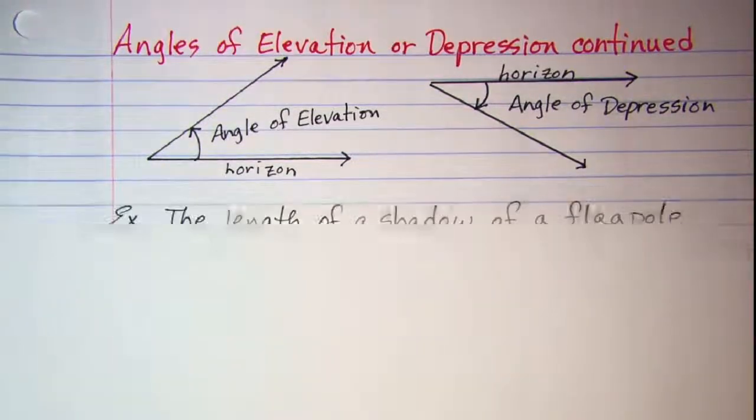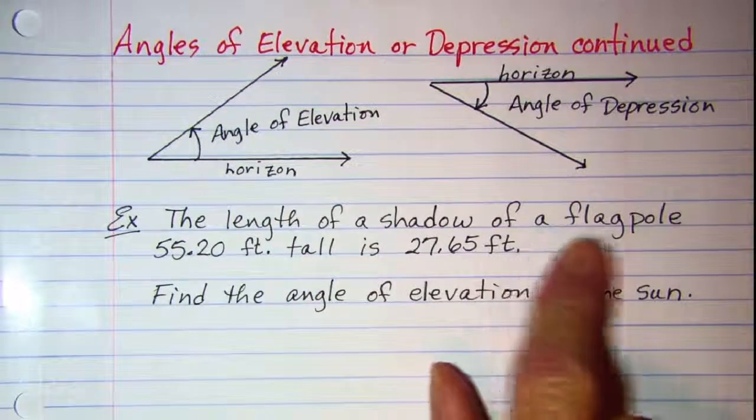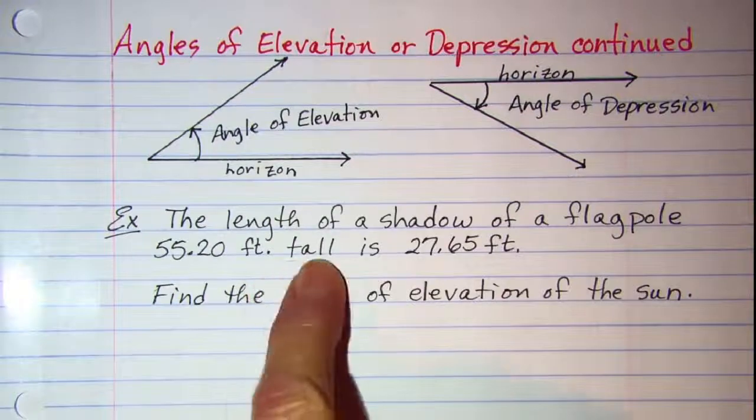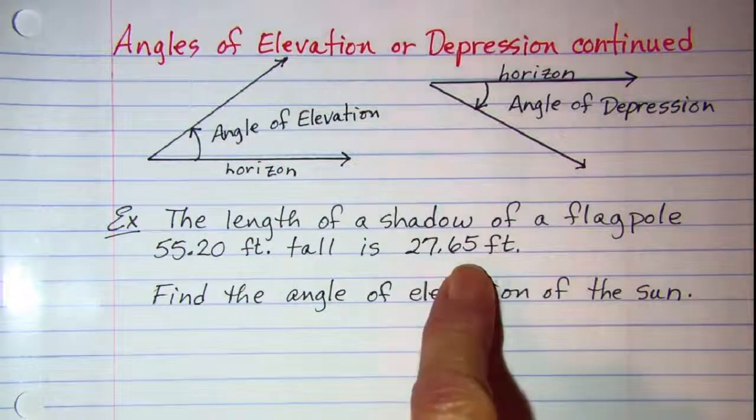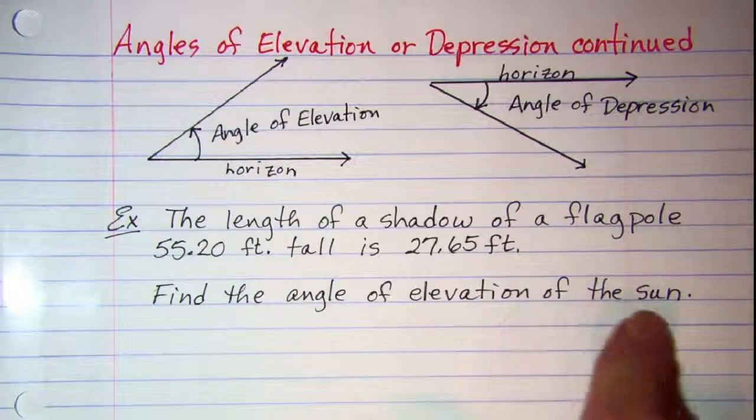The problem that we'll be working with is the length of a shadow of a flagpole, 55.20 feet tall, is 27.65 feet. Find the angle of elevation of the sun.